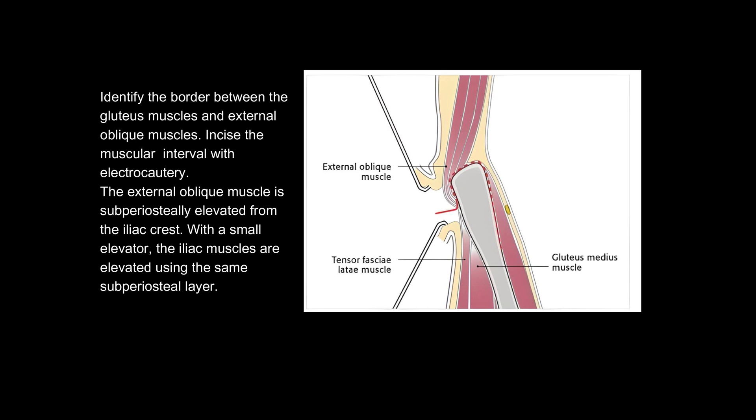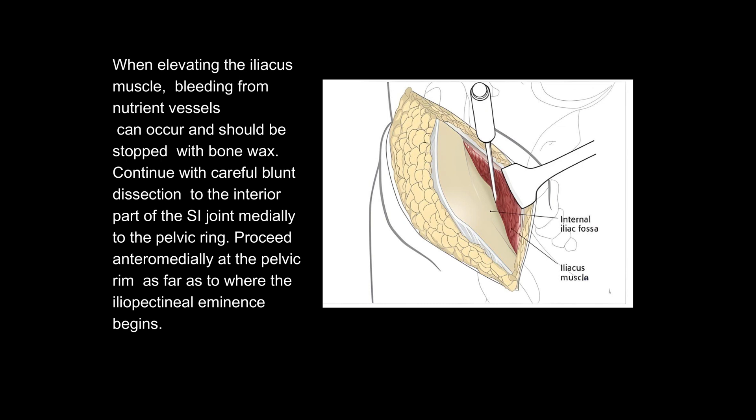The external oblique muscle is subperiosteally elevated from the iliac crest. With a small elevator, the iliac muscles are elevated using the same subperiosteal layer. When elevating the iliacus muscle, bleeding from nutrient vessels can occur and should be stopped with bone wax.